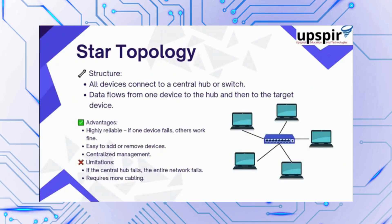Then came star topology, where devices are connected to a central hub with no circular loop. A device can talk to another device directly through the central hub. It was highly reliable — even if one device or one link fails, others continue to work. It's easy to add and remove devices and offers centralized management. The downside is that if the central hub fails, the whole network fails, and it requires more cabling.